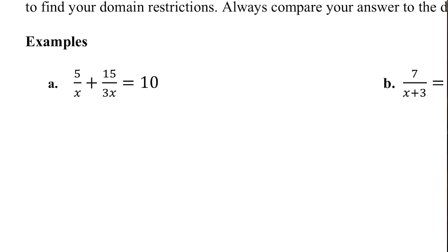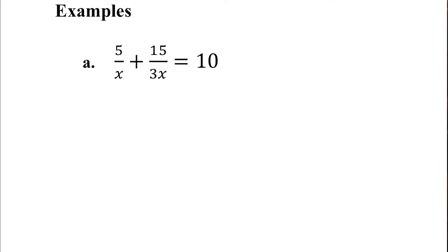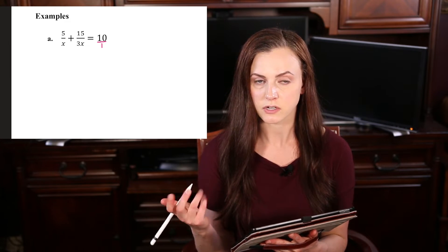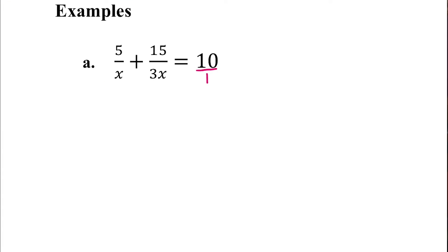So if we go into this first one, we have 5 over x plus 15 over 3x equals 10. So 10 has a denominator of 1 right now. First let's look at restrictions. We have an x in the bottom and a 3x in the bottom. Since it's just this single x, and there's just a 3 in front, if x was equal to 0 we would be dividing by 0 — that would be 5 over 0 and 15 over 0. So off to the side I'm going to write x cannot be 0.